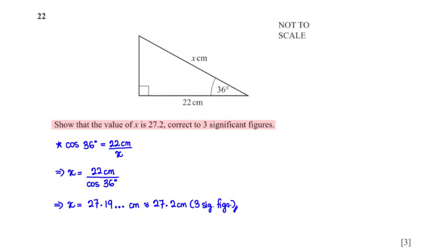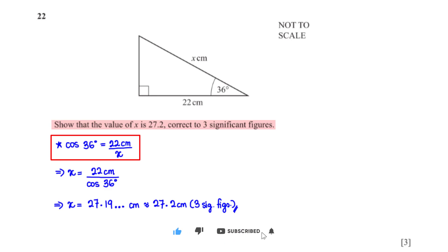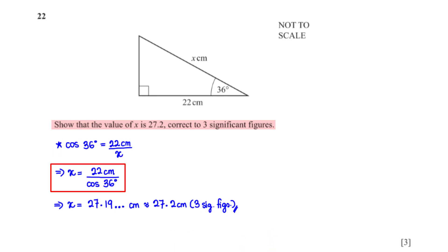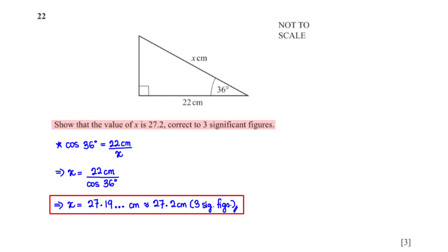Find the value of x, correct to 3 significant figures. Applying trigonometry (cosine rule): cos 36° equals 22 cm divided by x. Making x the subject and typing into the calculator gives approximately 27.2 centimetres, rounded to three significant figures.